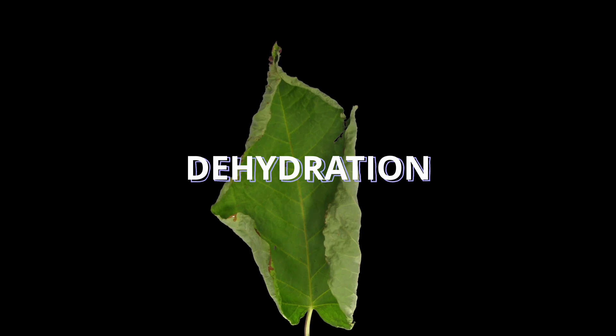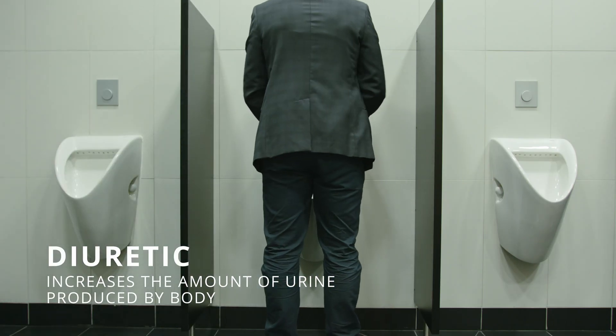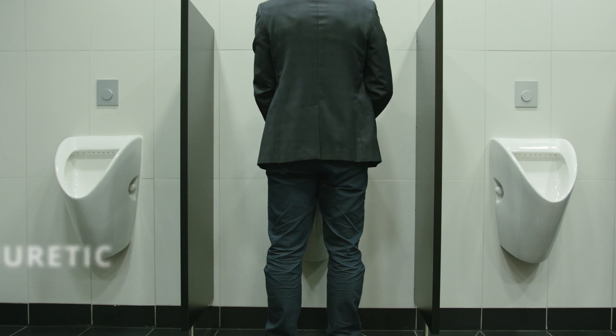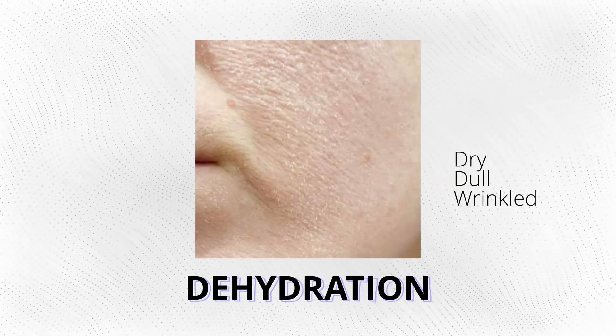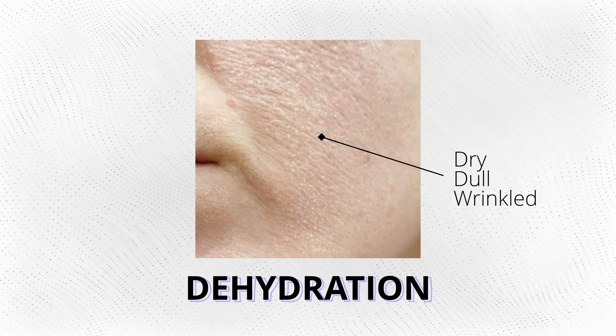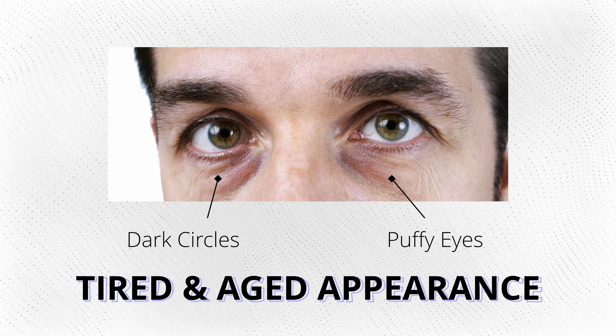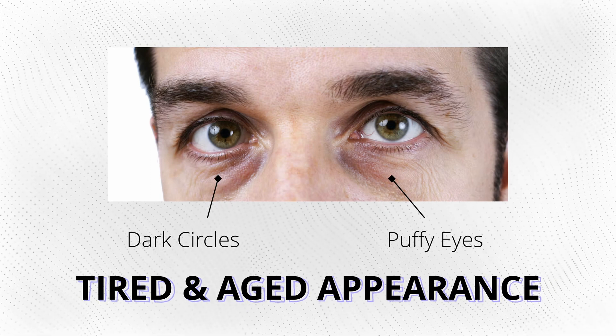The first reason alcohol causes accelerated aging is through dehydration. When we drink alcohol, it acts as a diuretic, meaning it increases the amount of urine our body produces. This can lead to dehydration, which can cause our skin to appear dry, dull, and wrinkled. In addition, excess alcohol can lead to puffy eyes and dark circles, giving us a tired and aged appearance.